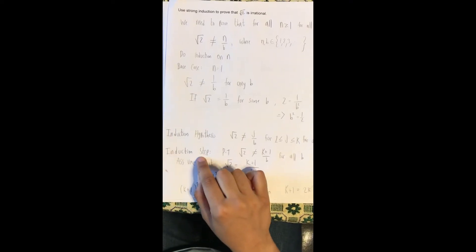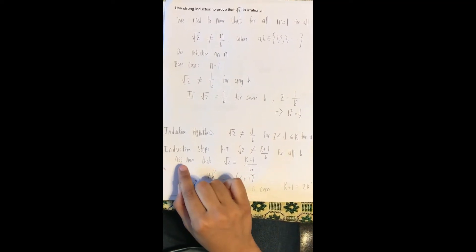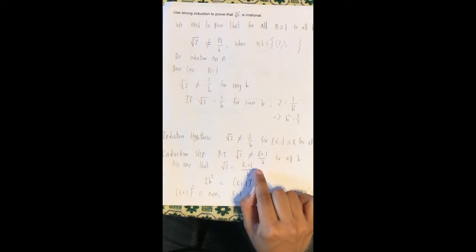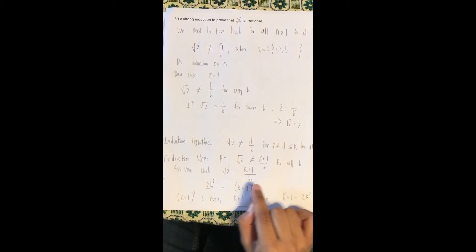In the induction step, we prove that square root of 2 is not equal to k plus 1 over b for all b. We assume that square root of 2 equals k plus 1 over b, so 2b squared equals k plus 1 the whole squared.